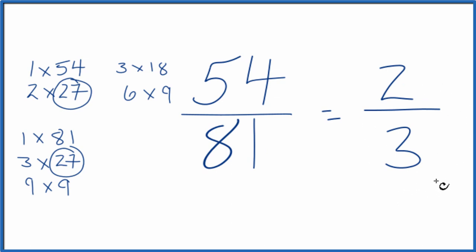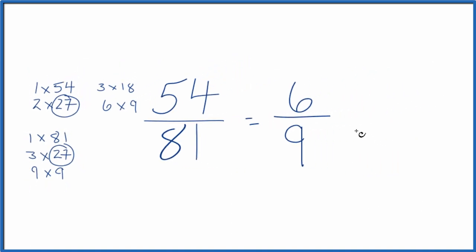There is one other way you could do this. If you knew that nine went into both 54 and 81, you could divide 54 by nine, that would give you six. 81 divided by nine gives you nine. And then you could reduce six ninths.